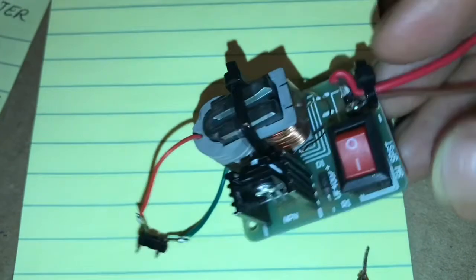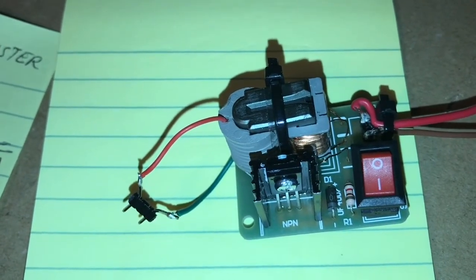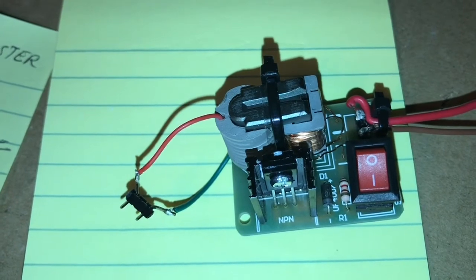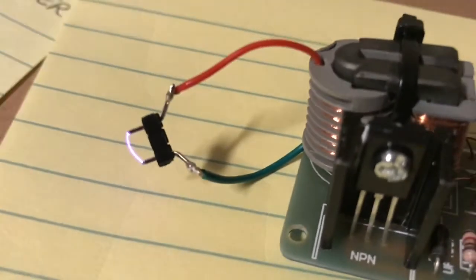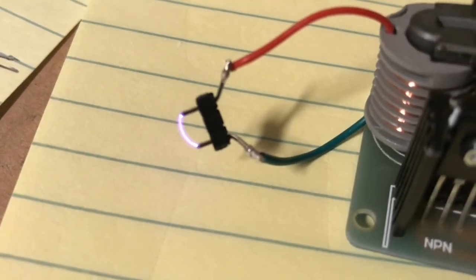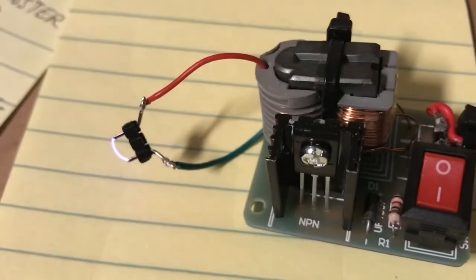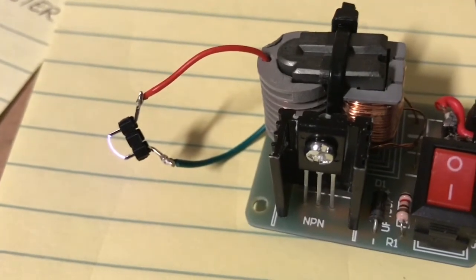So moment of truth. Here goes. I'm going to connect it to a lithium ion 3.7 volt battery. A nice arc. It's pretty hot. You could probably use that as an arc lighter.